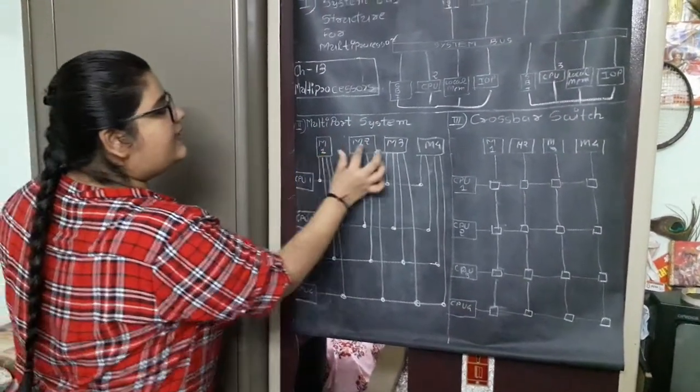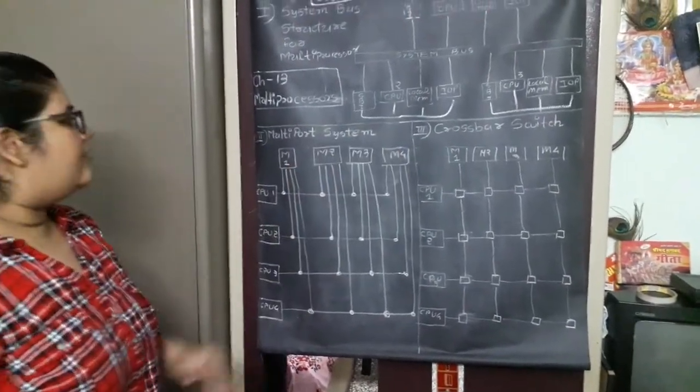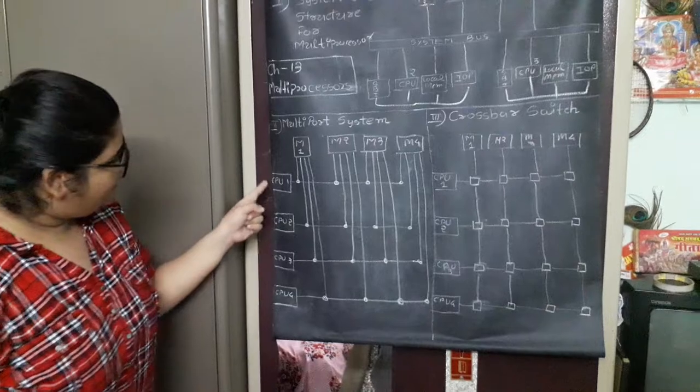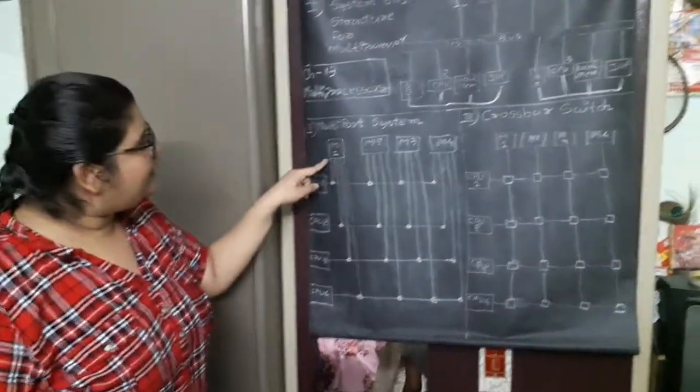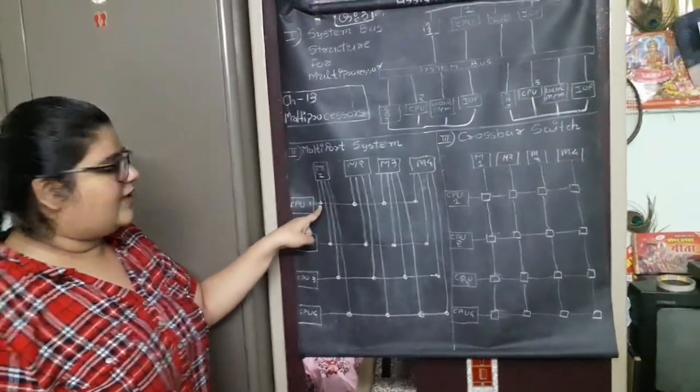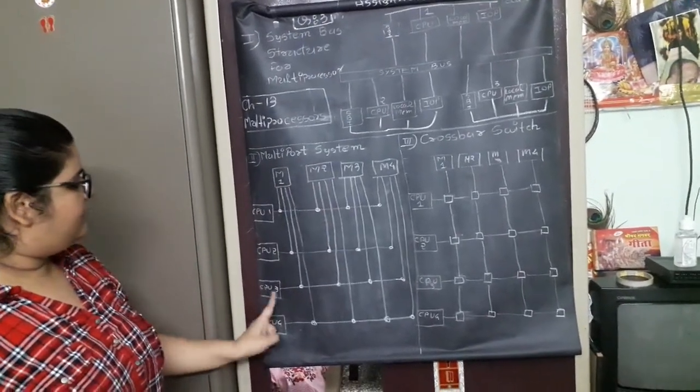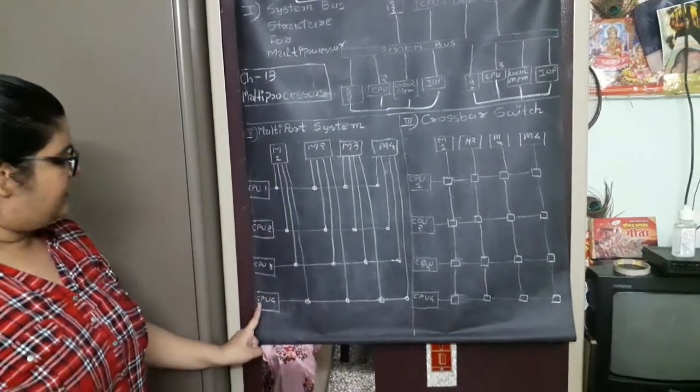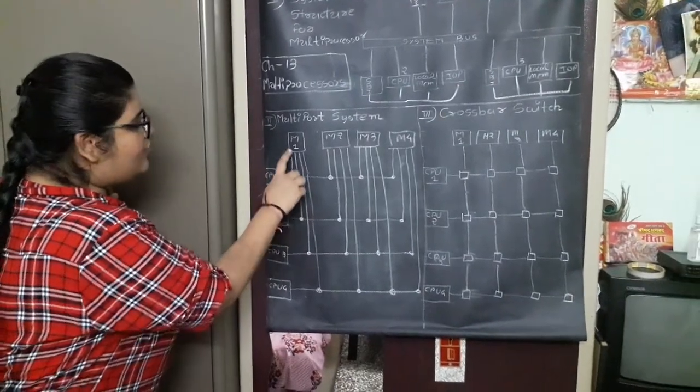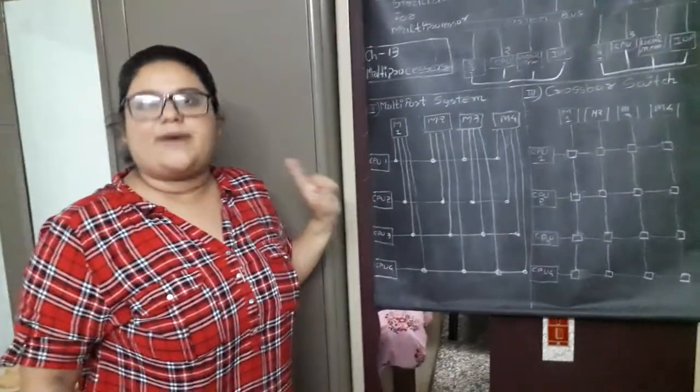Multi-port system. Over here, all the memory units available are over here: Memory 1 unit, memory 2, memory 3, memory 4. Suppose, I have 4 memory units. Parallelly, I have 4 CPUs. Each memory is connected with each CPU. Like, memory 1 is connected with CPU 1 with this port. Memory 1 is connected with CPU 2 with this port. Memory 1 is connected with CPU 3 with this port, and memory 1 is connected with CPU 4 with this port. What is the advantage of this system? Every CPU is independent of each other and they can read and write the data of memory 1 parallelly.